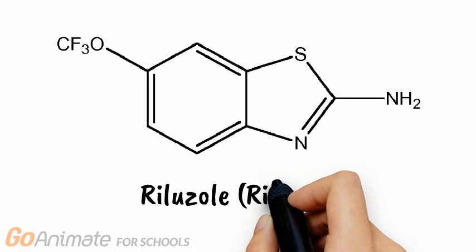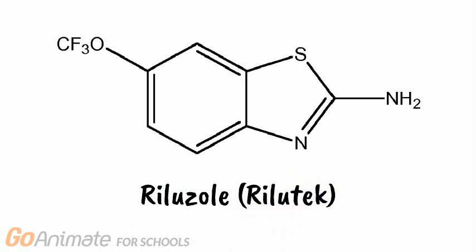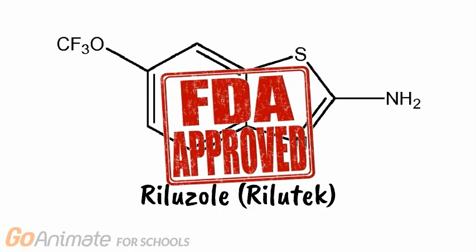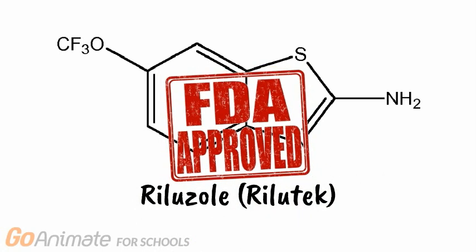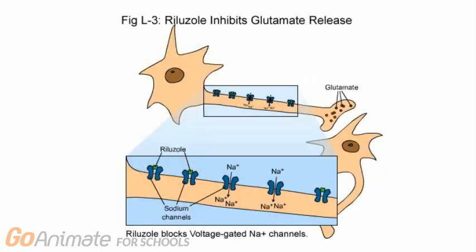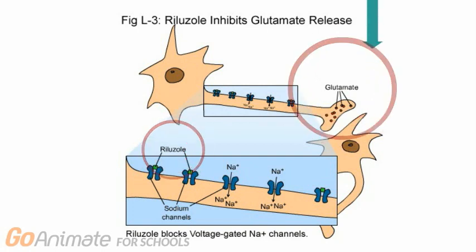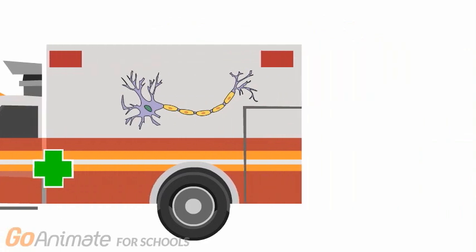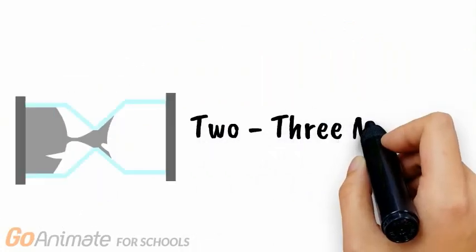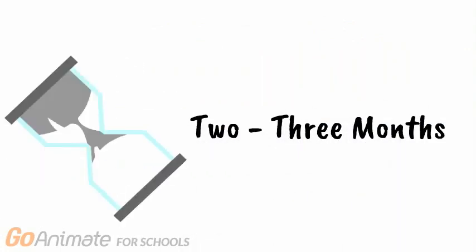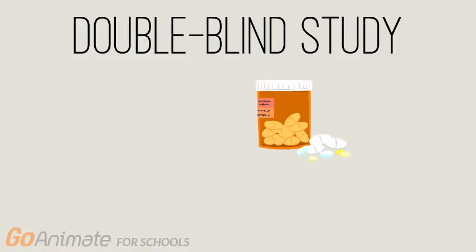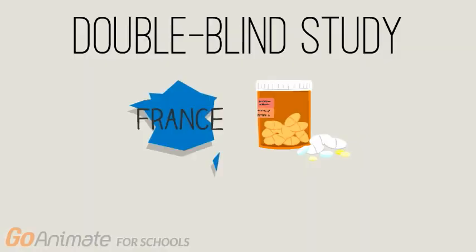Riluzole, also known as Rilutek, is the first FDA-approved drug to slow ALS progression. The drug acts as an inhibitor to block sodium channels on neurons, reducing the release of glutamate. This in turn delays cell apoptosis and is estimated to prolong survival by around two to three months. A double-blind study was conducted in France on the effects of riluzole on 155 ALS patients.